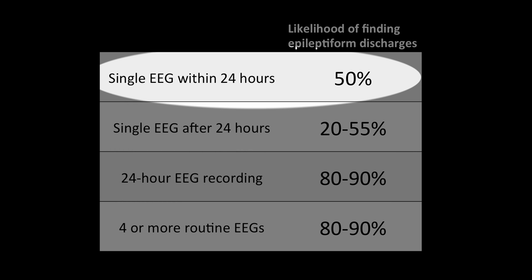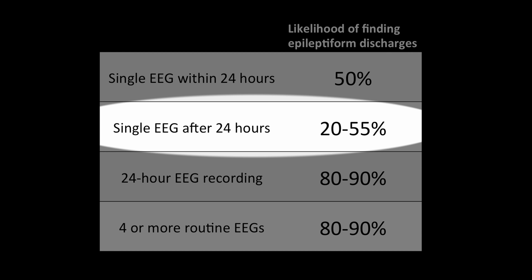It is useful to think about the diagnostic yield of EEG. In studies of patients with epilepsy, the likelihood of finding an epileptiform discharge, either focal or generalized, in a single EEG within 24 hours of a first seizure is about 50%. If the EEG is done more than 24 hours after the first seizure, the likelihood might drop somewhat. This means that half or even more than half of patients with epilepsy might have a normal routine EEG.